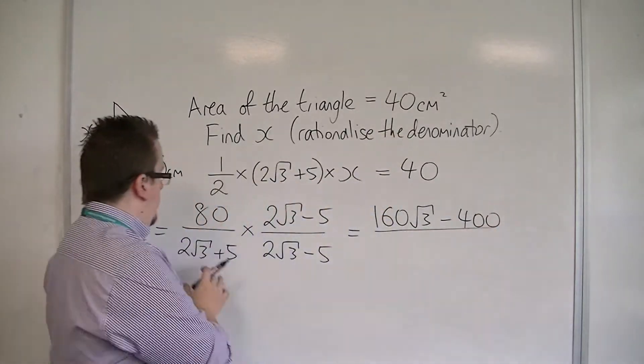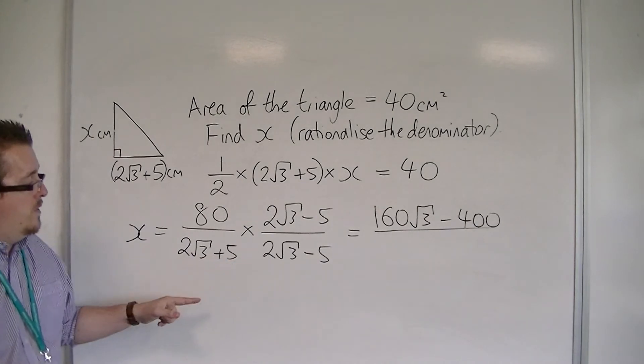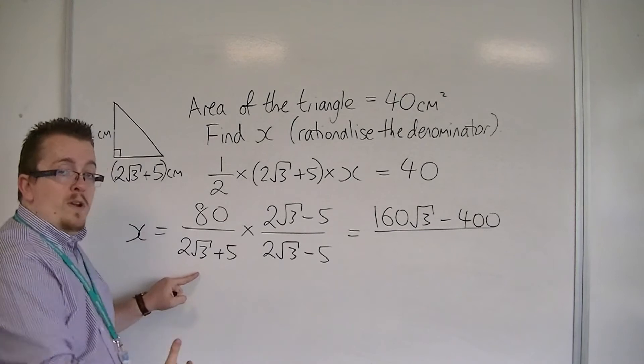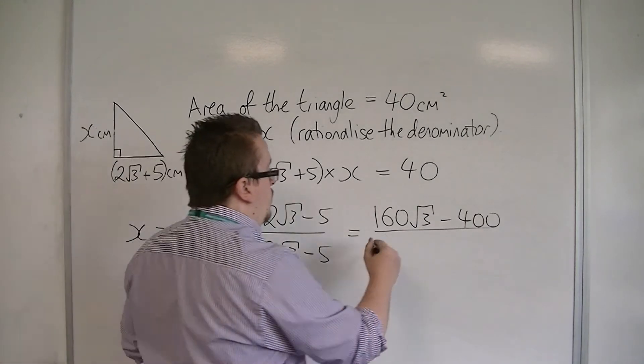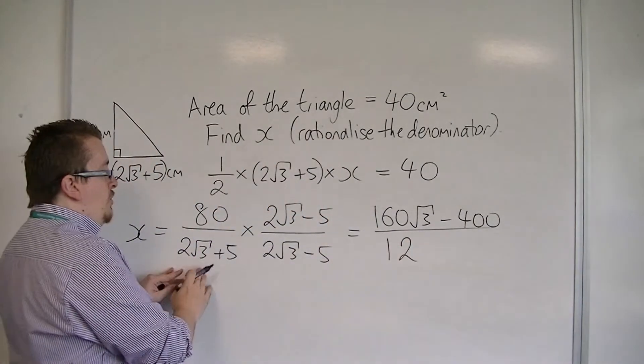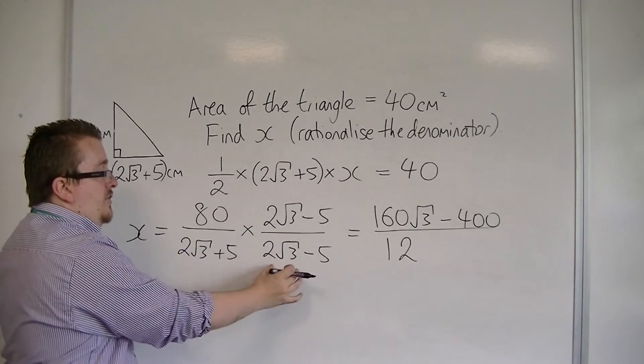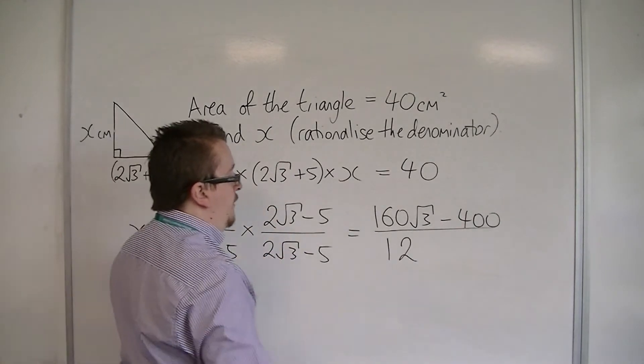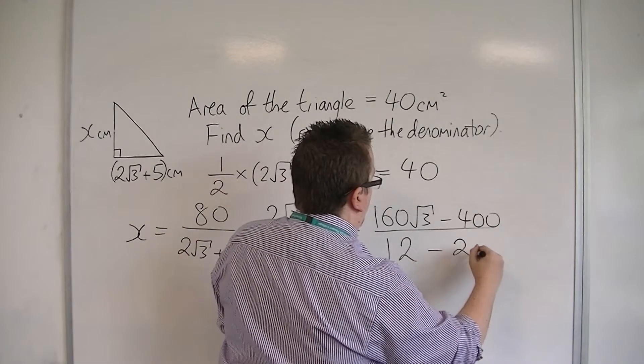All over, 2 root 3 times 2 root 3, so I've got 2 times 2 is 4, root 3 times root 3 is 3, so I've got 4 times 3 is 12. I've got the 2 root 3 times minus 5 and 2 root 3 times 5 will cancel each other out, and I've got the 5 times minus 5, which makes minus 25.